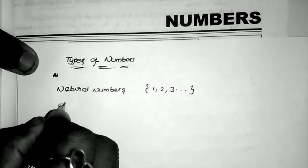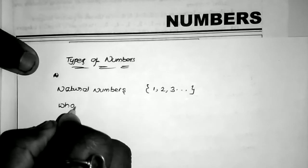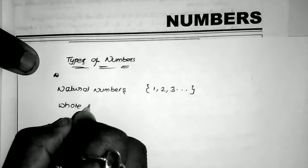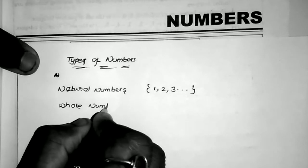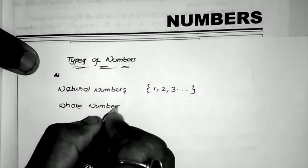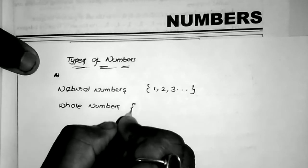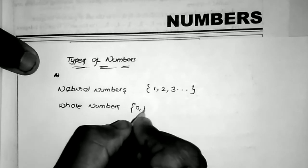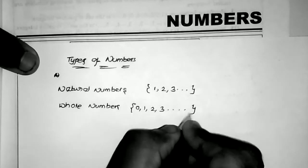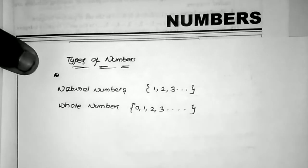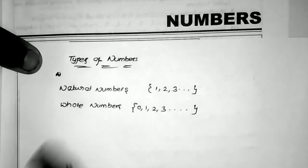The second type is whole numbers. Whole numbers are the numbers 0, 1, 2, 3, 4, and so on. These are called the whole numbers.